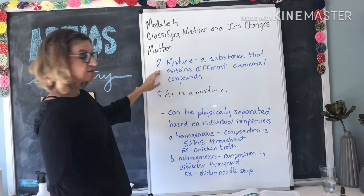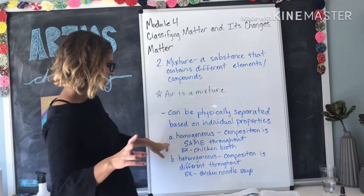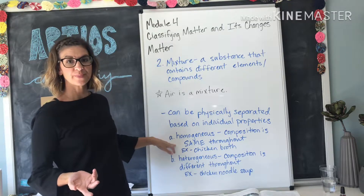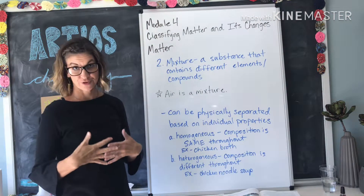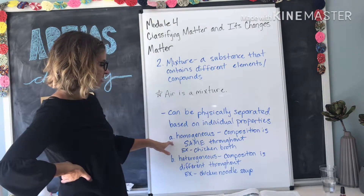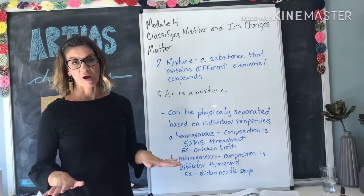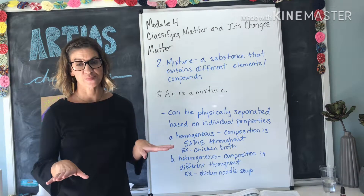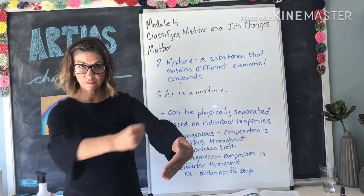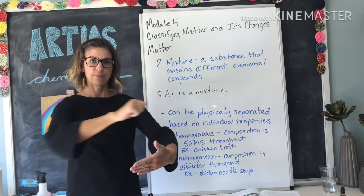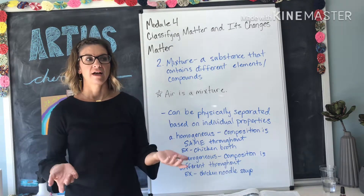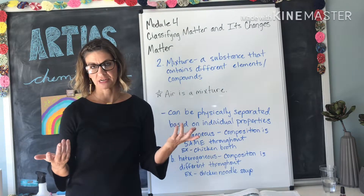Underneath mixture, we can also talk about two different classifications. First, a homogeneous mixture. You may have also heard this pronounced 'homogeneous' and you can say either one, but I'll follow the book and say homogeneous. A homogeneous mixture has a composition that is the same throughout. The prefix 'homo' means same, so that should help you remember. For example, chicken broth — if you have a big pot of chicken broth and you take a ladle full from one side versus another, they're going to look the same: same color, same taste, no little pieces of anything floating around.